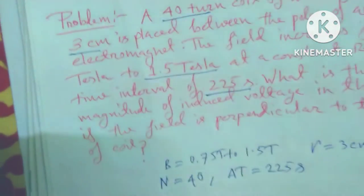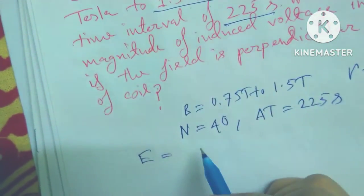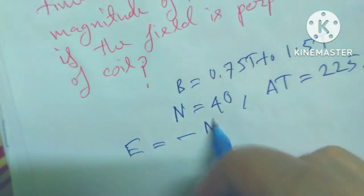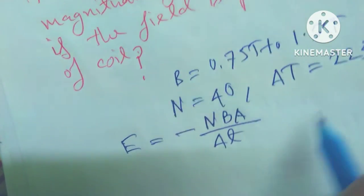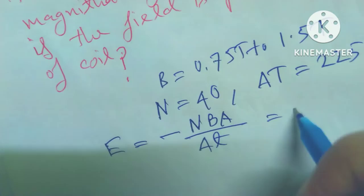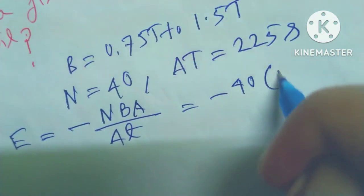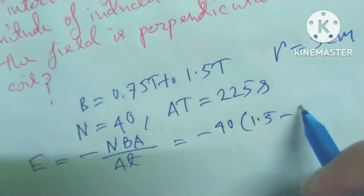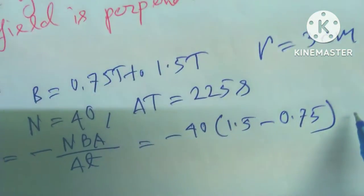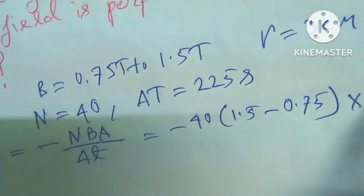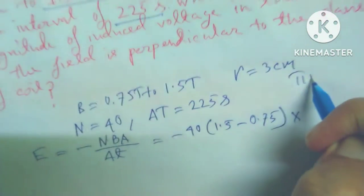So E equals to minus N BA divided by del t, and equals to minus 40 into 1.5 minus 0.75, and the area A is equal to pi r square.